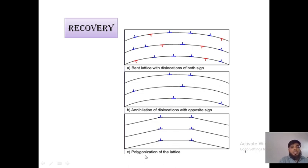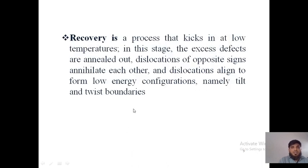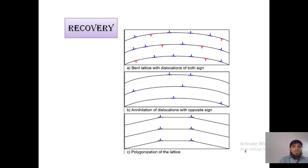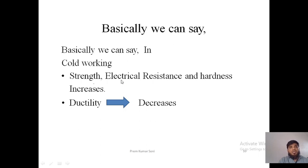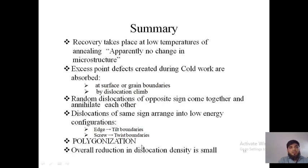Polygonization is the process where atoms obtain a stabilized nature. Recovery occurs at low temperature: excess defects are annealed out, dislocations of opposite sign annihilate each other, and dislocations align into lower energy configurations — namely tilt and twist boundaries. Cold working improves strength but reduces ductility, making the material brittle after application.